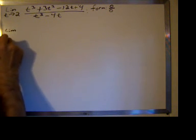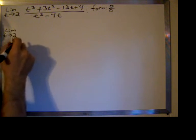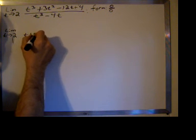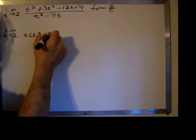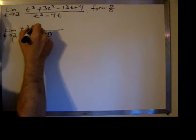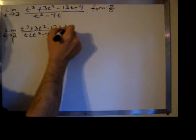So doing that, we have the limit as t approaches 2 from both sides. We can factor a t out of the denominator, leaving t times t squared minus 4. We have t cubed plus 3t squared minus 12t plus 4 on the top.